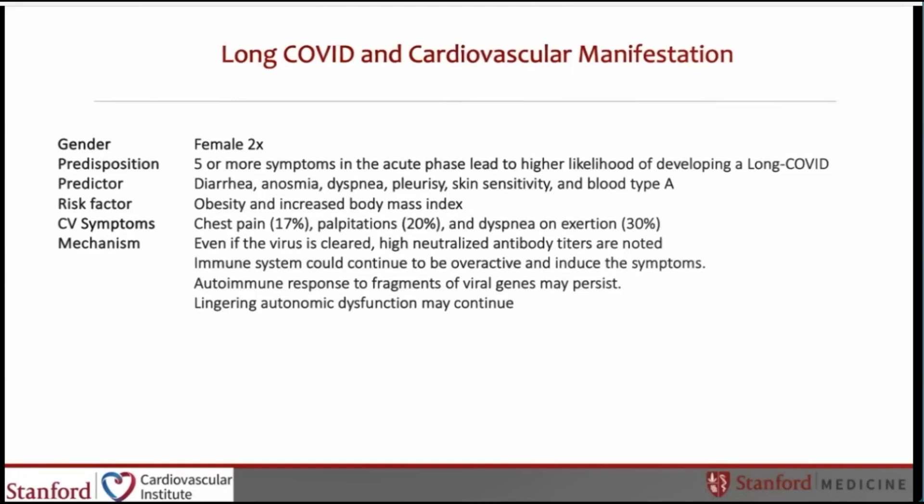In terms of mechanism, even after the virus was cleared, there was a high neutralizing antibody titer. The immune system could continue to be overactive, inducing symptoms. Autoimmune-responsive fragments of viral genes may persist, and there is also lingering autonomic dysfunction.